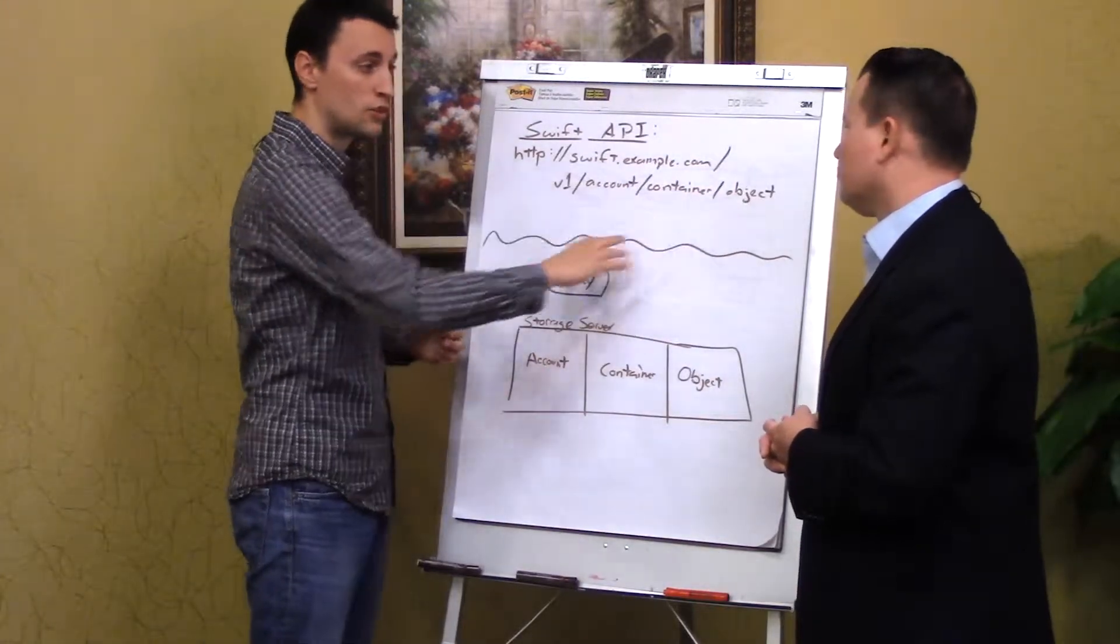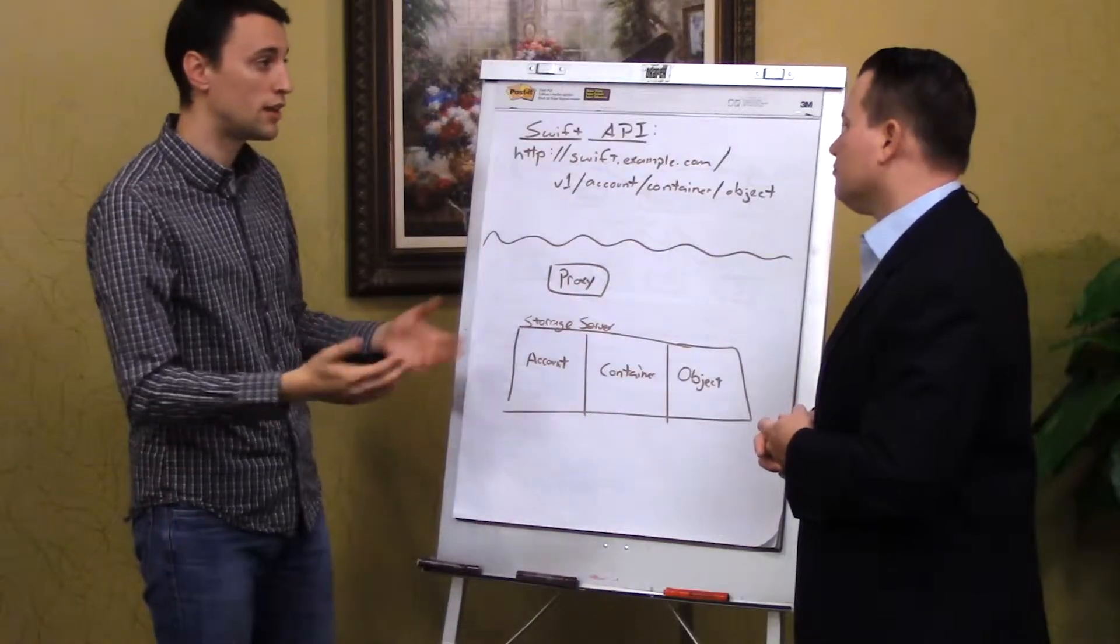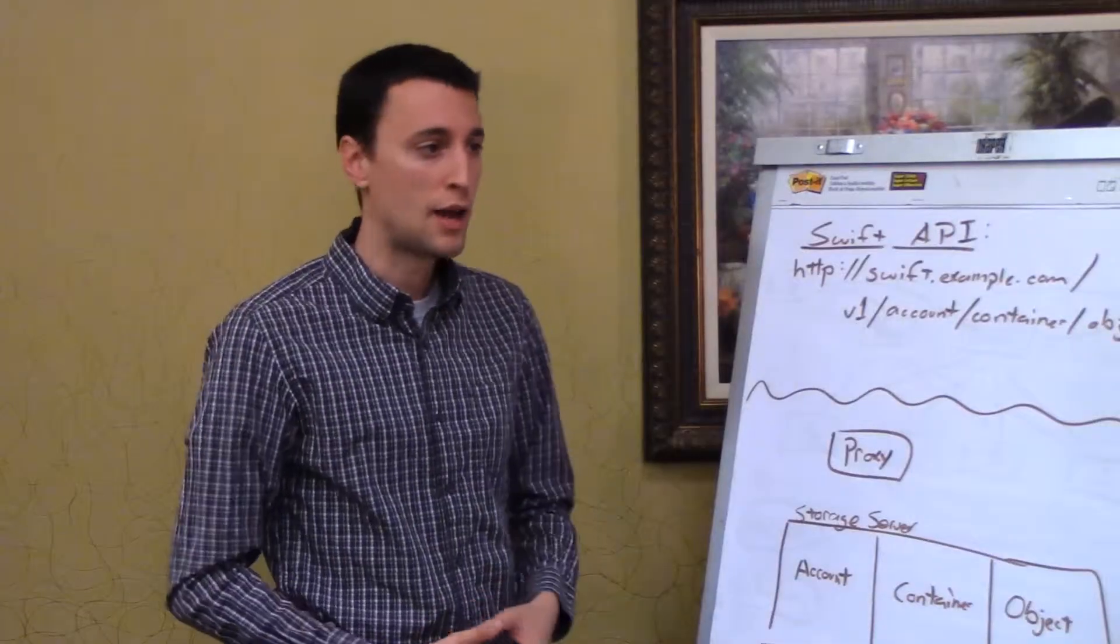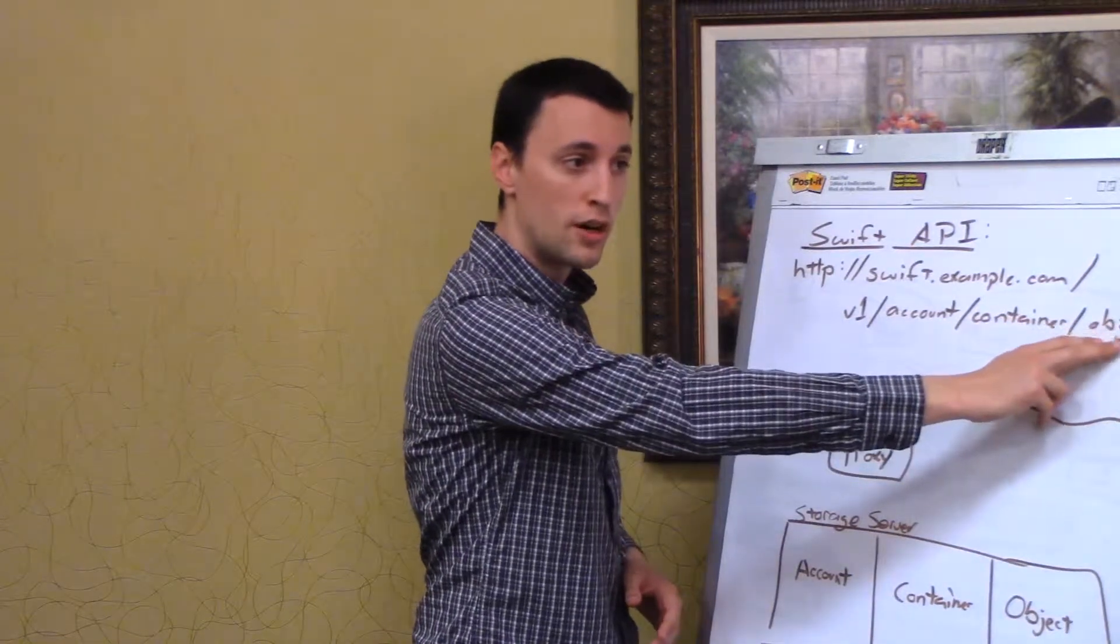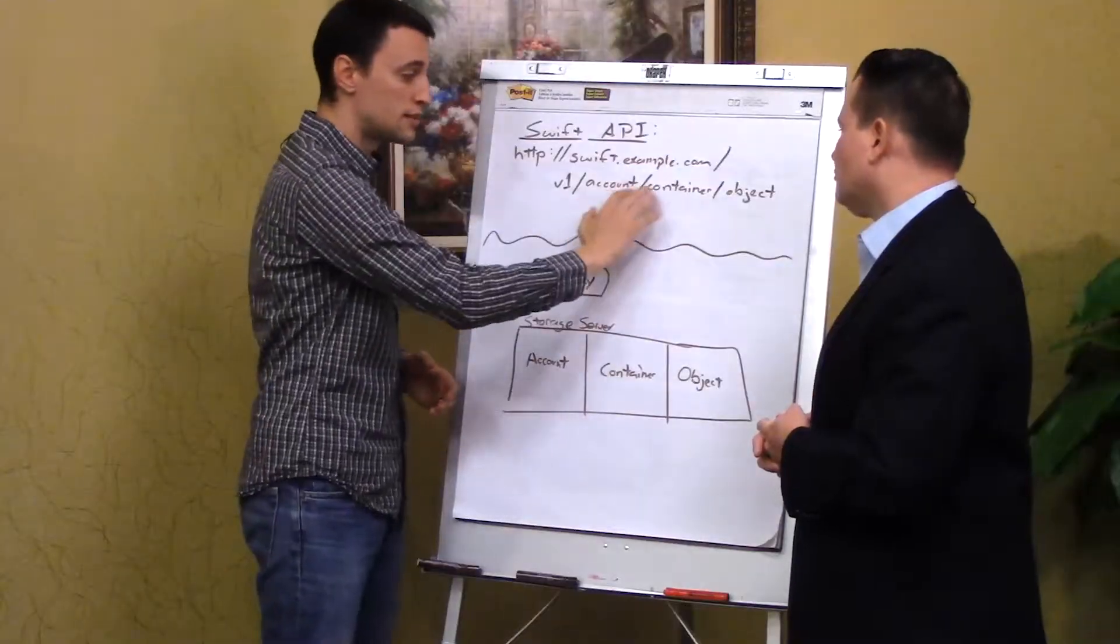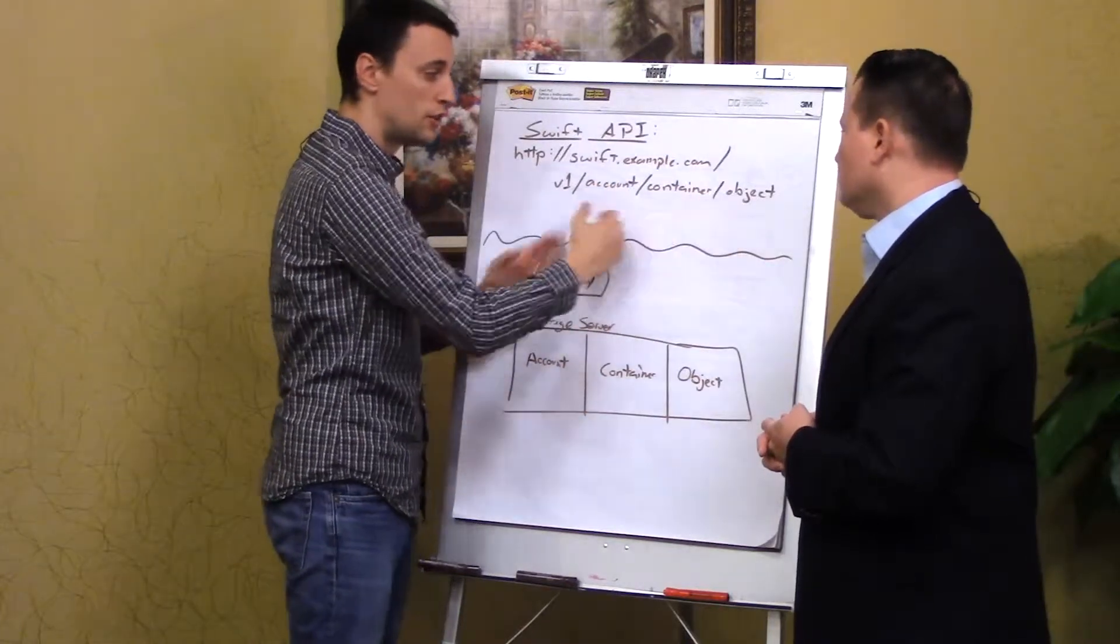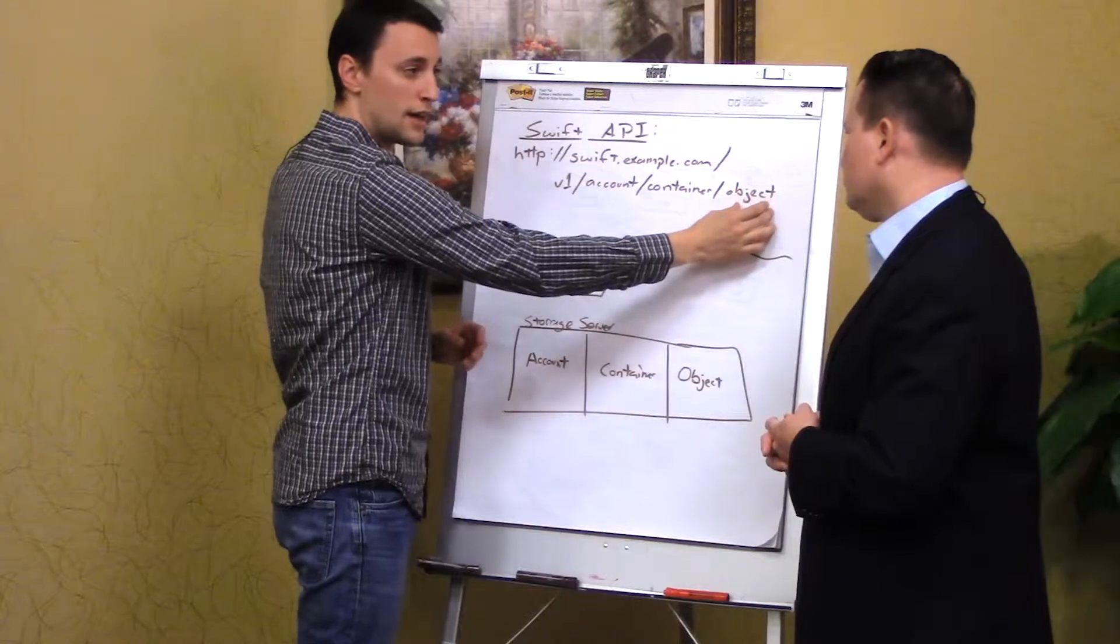These are really just subdivisions of the overall namespace within Swift. An account stores a listing of all of your containers that you have and some aggregated metadata, like how many bytes do I have stored in this whole thing? How many objects do I have? The container is similar in that it stores a listing of all of the objects, and then it has some aggregated metadata, like how many bytes are in this particular thing?